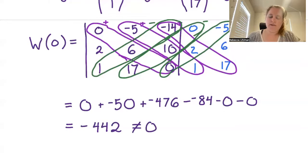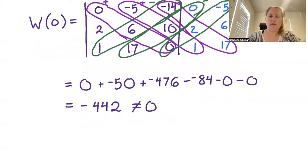So in this case, since the Wronskian is non-zero somewhere, then we get that Y1 through Y3 form a fundamental set.